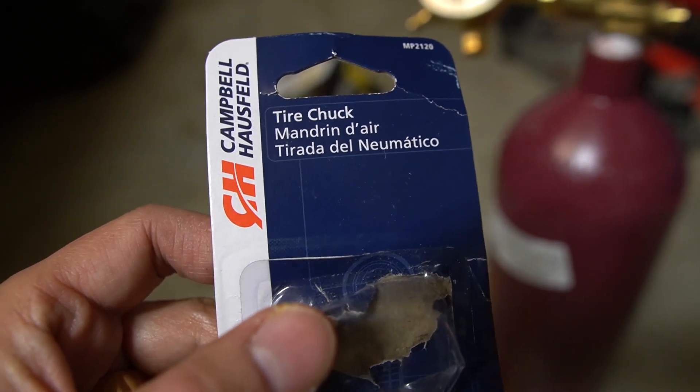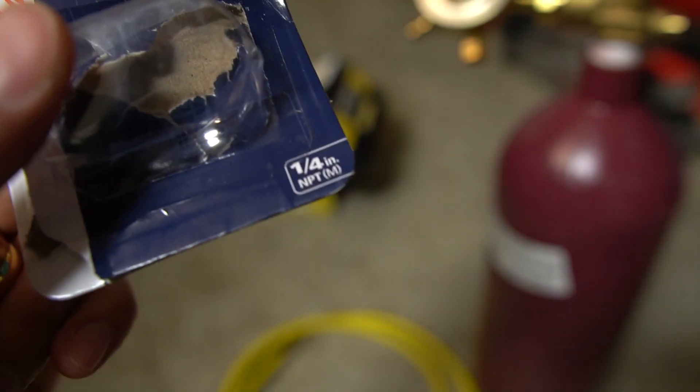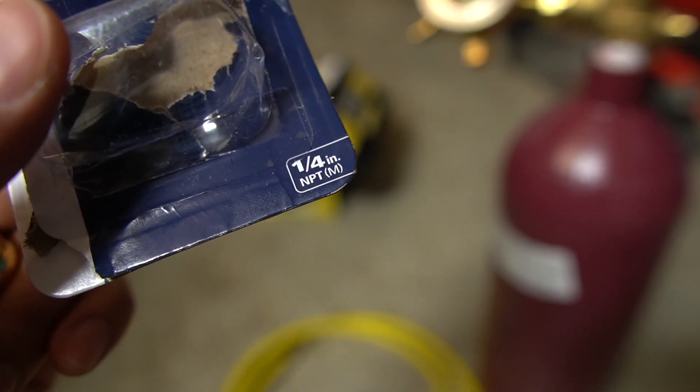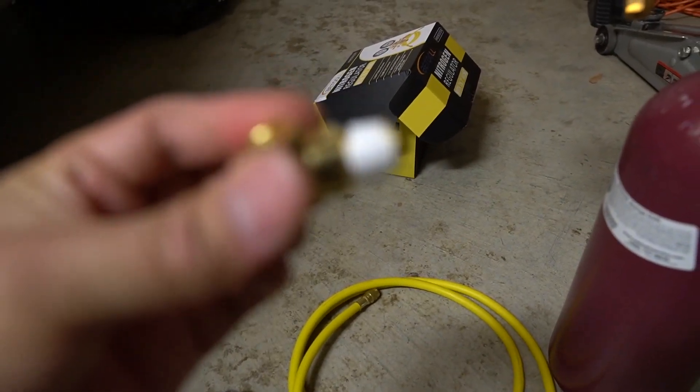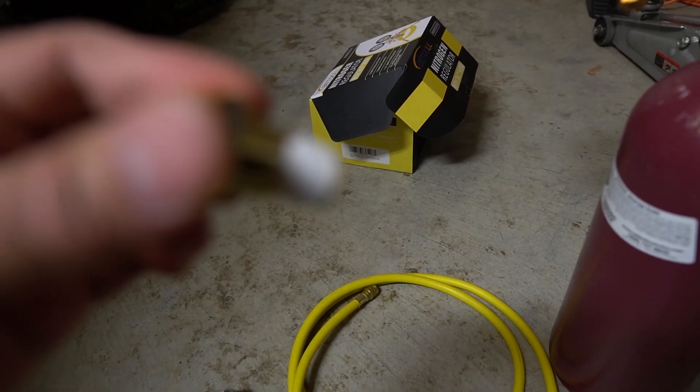I also forgot—you'll also need a tire chuck. It's a quarter-inch NPT, which is incorrect. What you actually need is quarter-inch flare so that this hose right here will fit directly to it. Your hose might be different.